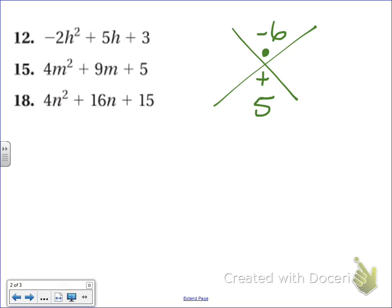So we need two numbers that will multiply to give us negative 6 and add to give us positive 5. So if I'm thinking about it correctly, let's try 6 and negative 1. Because 6 times negative 1 will give us negative 6, but 6 plus negative 1 equals 5. So what I'm going to do is use the 6 and the negative 1, and I replace the 5h with 6h and negative 1h.